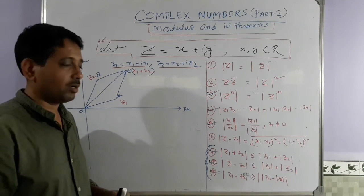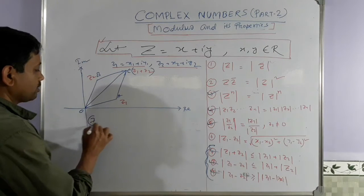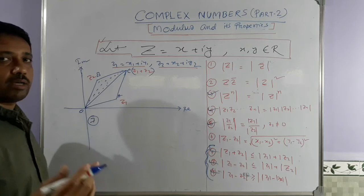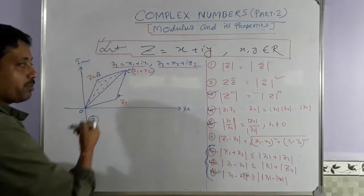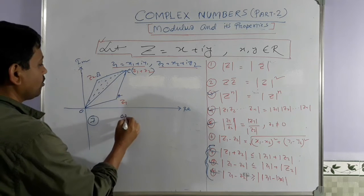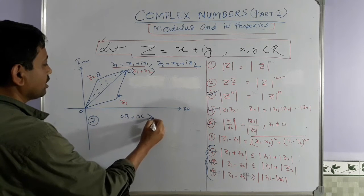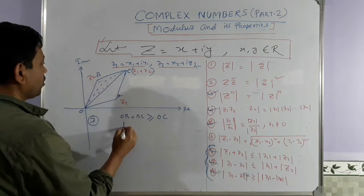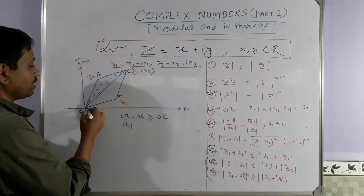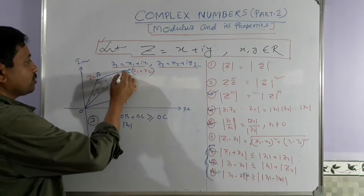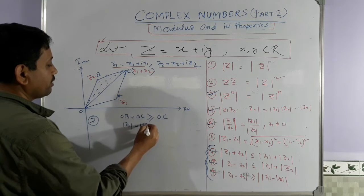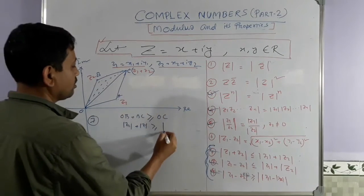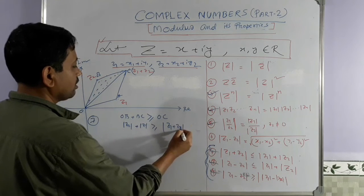Properties 7, 8, and 9 are inequalities related to complex numbers. For property 7, consider a triangle. By the triangle inequality, the sum of two sides must be greater than the largest side BC. So OB + BC ≥ OC. Here OB = |z₂|, and BC equals the length of OA (since it's a parallelogram), so BC = |z₁|. Therefore |z₁| + |z₂| ≥ |z₁ + z₂|. This is an important rule.